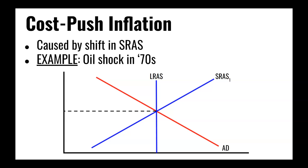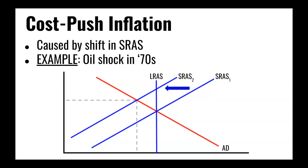Visually, cost push inflation is where short-run aggregate supply shifts to the left, like when there was the oil embargo of the 1970s. When that happens, short-run aggregate supply shifts to the left and moves our equilibrium point along the aggregate demand curve to a point at which prices are now higher and output is less.